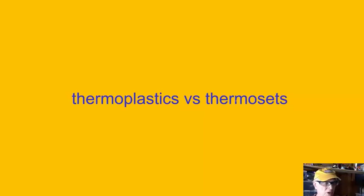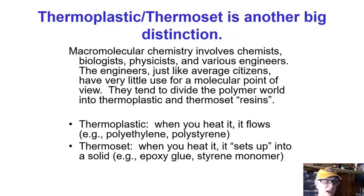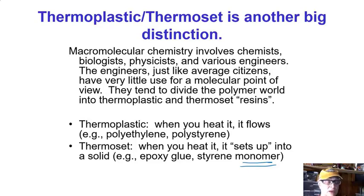Now a word about thermoplastics and thermosets — another big categorization of polymers. The distinction is: a thermoplastic flows when you heat it, if it doesn't decompose first. A thermoset uses heat to set up into a solid. Epoxy glue is a thermoset. Polystyrene is a thermoplastic — heat it and it will melt. The styrene monomer is a liquid that sets into a solid; that solid is a thermoplastic. So the monomer process is thermoset behavior, while the resulting polymer is thermoplastic — kind of confusing.